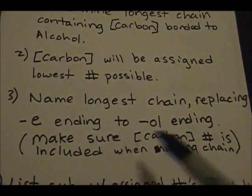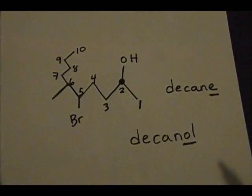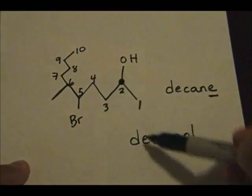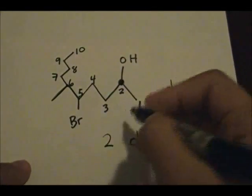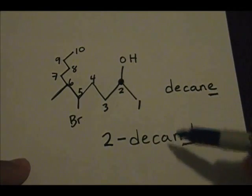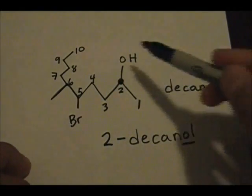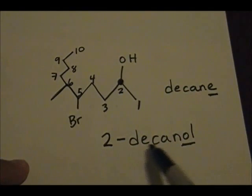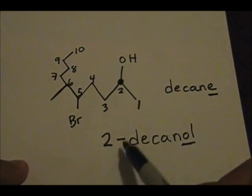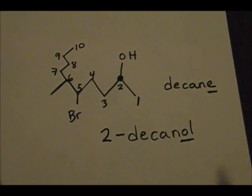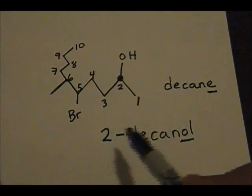The next part is to make sure the carbon number is included when naming the chain — referring to the carbon directly attached to the alcohol. We have to include number two as part of the name, so we have 2-decanol. If we didn't put two, we would not know where the alcohol is located. This tells us there is an alcohol on the second carbon of this ten-carbon chain.